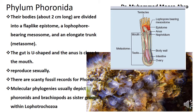The body size is 2 cm, and the body is divided into three major parts. The first part is called the epistome, a flap-like structure. Where the lophophore is located, we call it the mesosome. The trunk-like structure is called the metasome. So the body is divided into epistome, mesosome, and metasome.